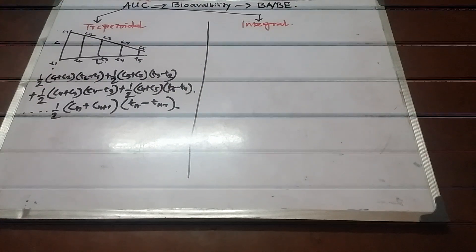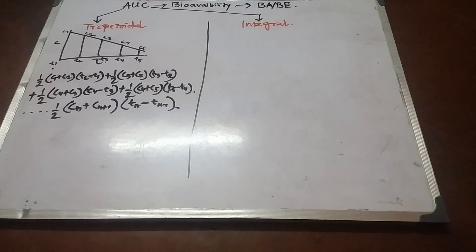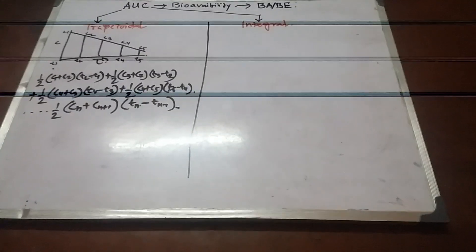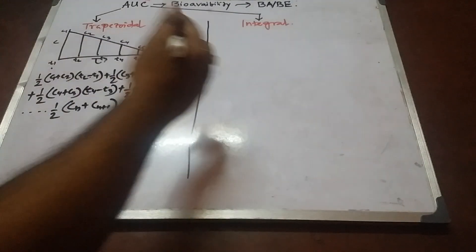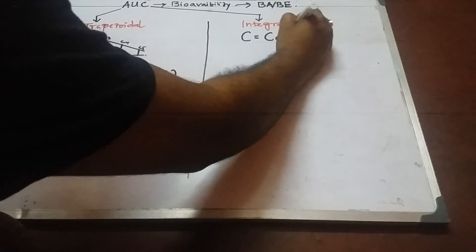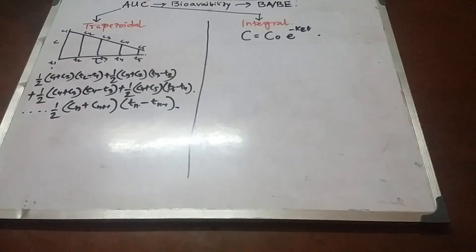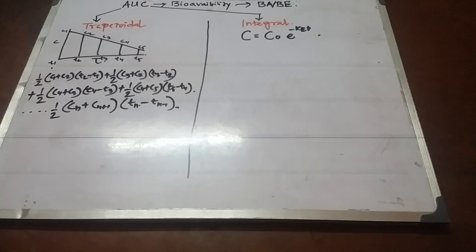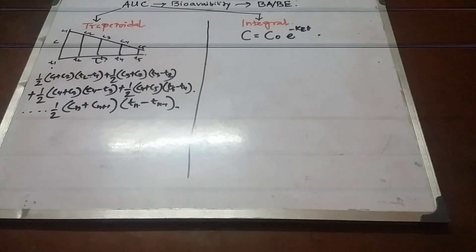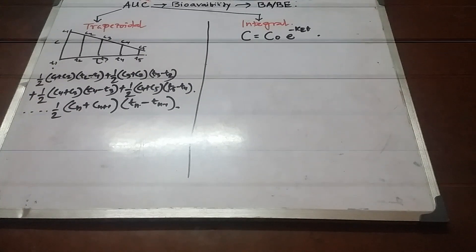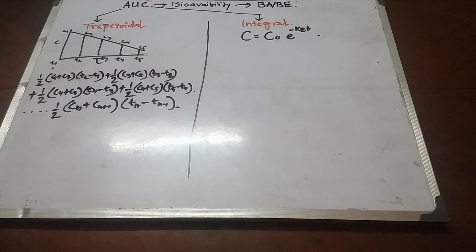The initial consideration involves the concentration, rate of elimination, time, and initial concentration. As per first-order kinetics for IV bolus, unchanged drug in blood plasma: C equals C₀ times e to the power of minus ke times t. Here, C is the concentration of the drug at a given time t, C₀ is the initial dose, ke is the elimination rate constant, and t is the time at which concentration is C.